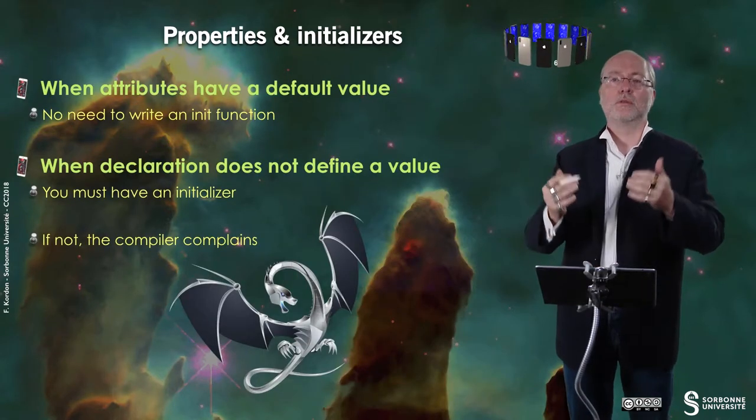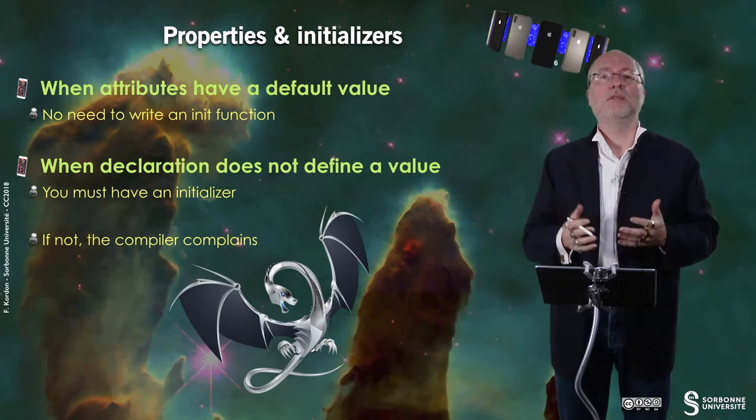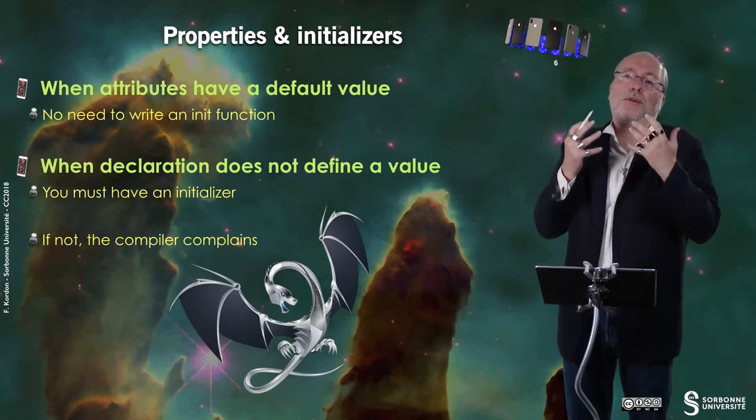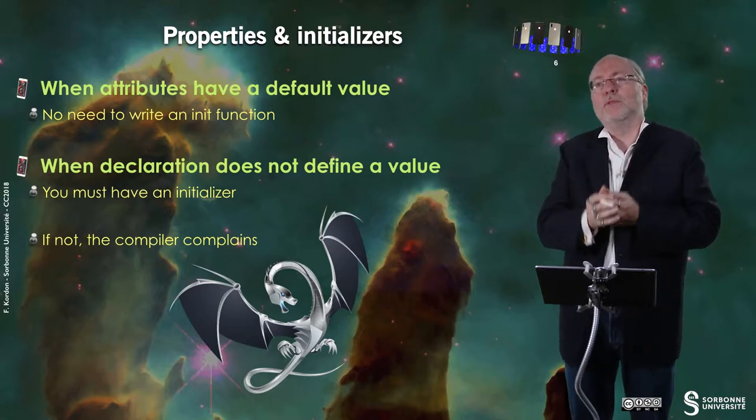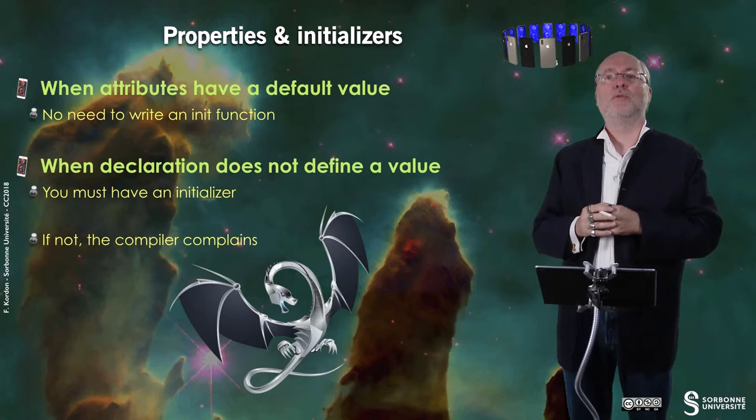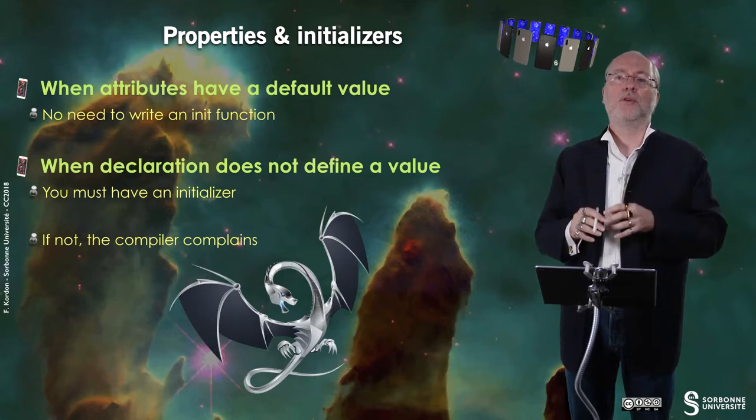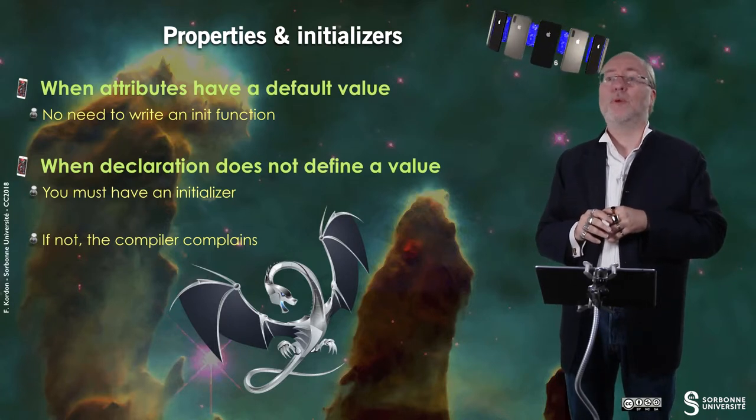According to the way you set the properties in your classes, you may require or not an initializer. Basically, if all the attributes or properties in your class have a default value, there is no need to write an init function. Because, in fact, the language will assume that these default values are those of a new instance of this class. But when you declare a property that has no default value, you must have an initializer. Otherwise, the compiler will complain and refuse to compile your class.